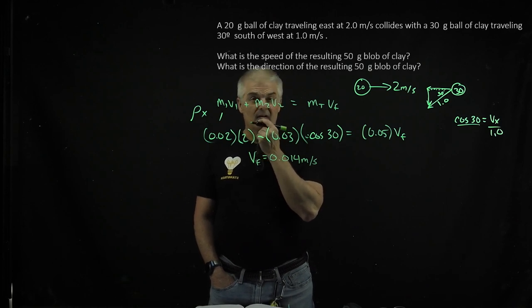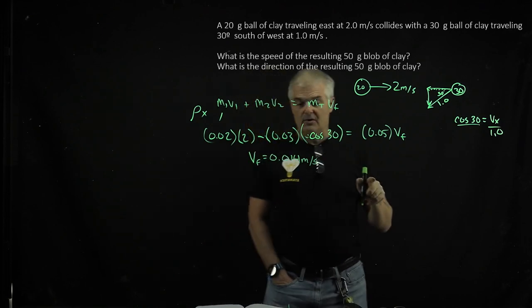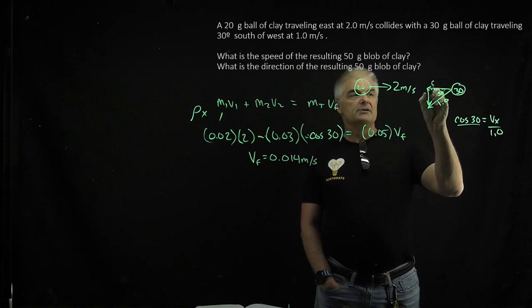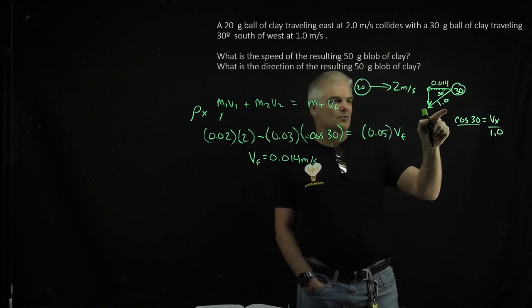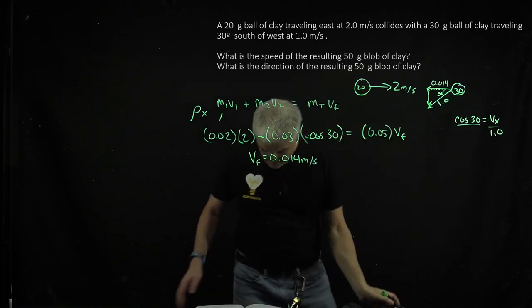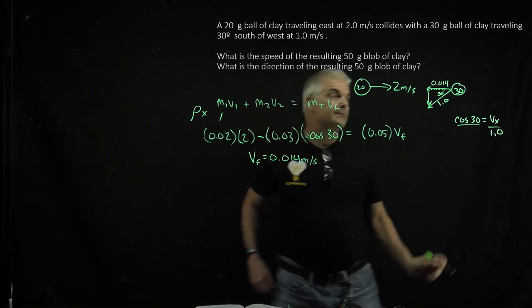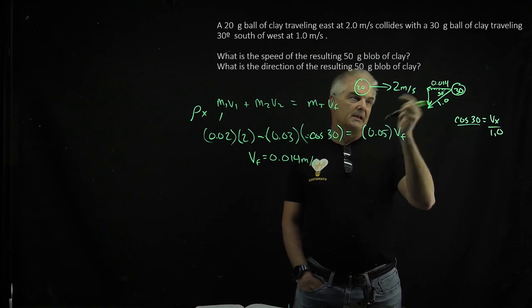Now that is the final velocity. What is the speed of the resulting blob? In our triangle, if we know that x is 0.014—wait a second, that can't be right. Is it that small? Yeah, that's what it is. It's a very small number, but most of the energy has been taken out by the collision.